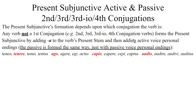As for the other conjugations — the second, the third, the third IO, and the fourth — the present subjunctive is formed in the following way. Basically for a non-first conjugation verb, you take the present stem of the verb and you add the letter A to that stem, then you add active voice personal endings. The passive voice is formed in the exact same way, just exchanging the active voice personal endings for the passive voice personal endings.